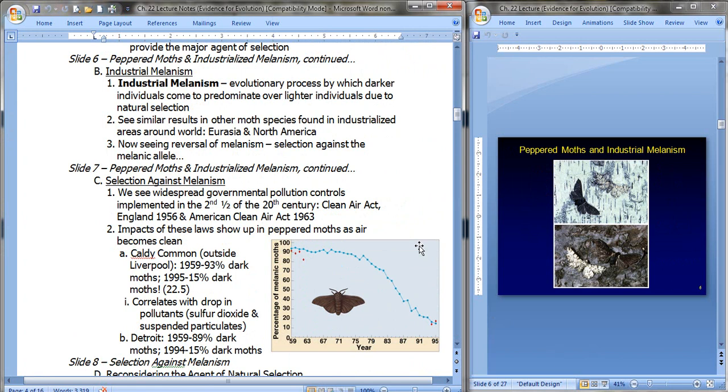And here are the pictures of the moths again. So what is industrial melanism? It's an evolutionary process by which darker individuals come to predominate over lighter individuals due to natural selection. We see similar results in other moth species found in industrialized areas around the world, Eurasia and even North America. Now we even see the reversal of melanism, selection against the melanic allele. Remember that's the dark one.